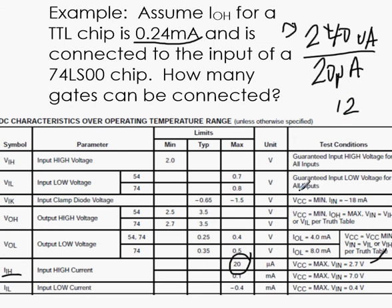So it gives us 12 gates that we can use before we cause any problems to the chip. So the fan out for this system would be 12.